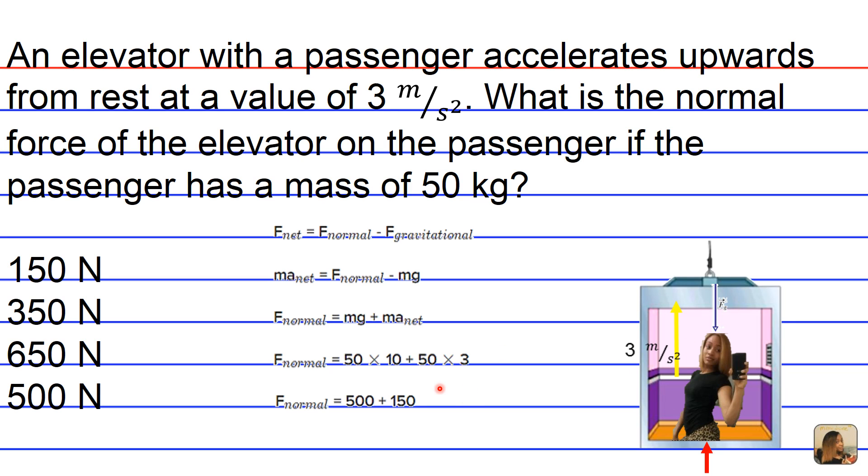Alright, so when we simplify that we get 500 newtons plus 150 newtons for a total of 650 newtons. So the correct answer choice is answer choice C, 650 newtons.